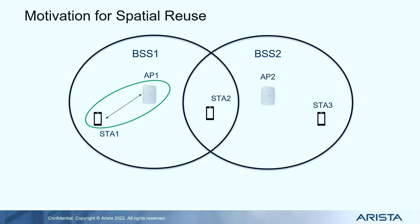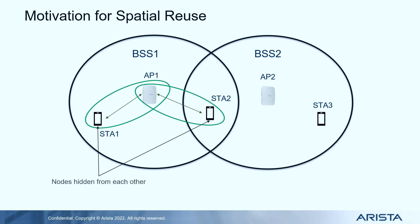If either node wants to transmit, it will use CSMA/CA to figure out when the channel is available. If the channel is free, apply back-off and then get ready to transmit. Now when we introduce a second link in the same BSS, you have a complex scenario where you need to look at two different nodes. If STA1 and STA2 are placed such that they cannot hear each other in the RF sense, STA1 may not hear STA2's transmission, think the channel is free, and start transmitting, which will lead to a collision. This is what we know as the hidden node problem.